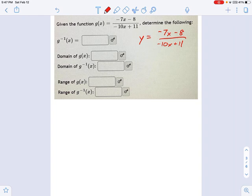Next thing is you switch x and y. So we literally switch them. We say x equals negative 7y minus 8, all divided by negative 10y plus 11. So step 2 is done.